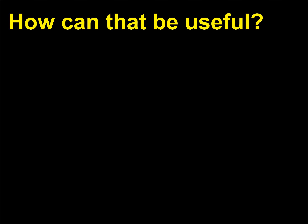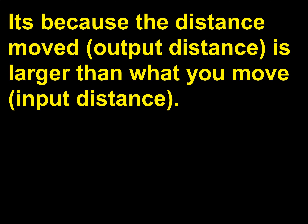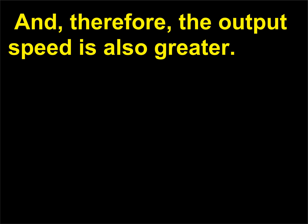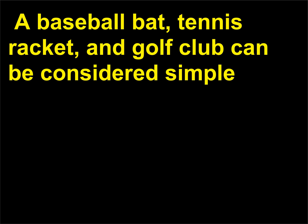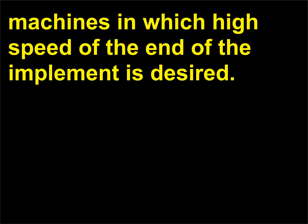How can that be useful? It's because the distance moved (output distance) is larger than what you move (input distance), and therefore the output speed is also greater. A baseball bat, tennis racket, and golf club can be considered simple machines in which high speed of the end of the implement is desired.